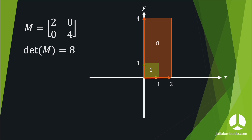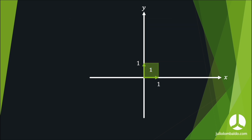We don't have a complete answer yet. We can change the matrix and apply the process to the original unit square with area one. The new area changes because the vectors resulting from the matrix-vector products change. The new area equals eight times one — that is, the determinant eight multiplied by the original area.